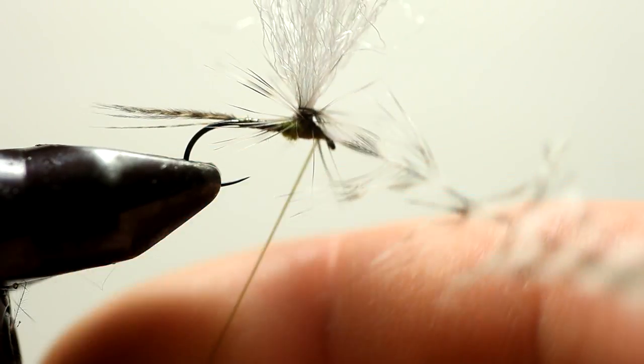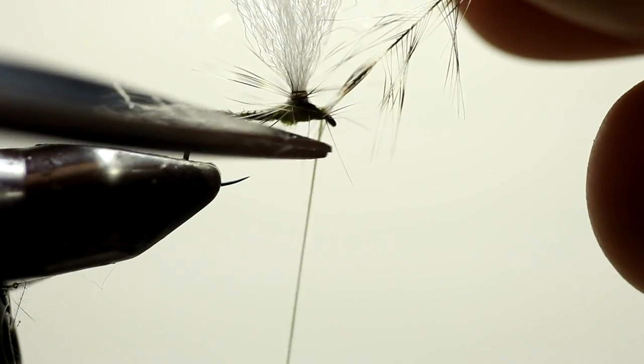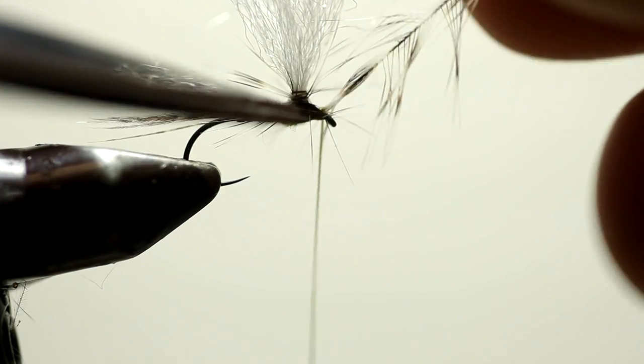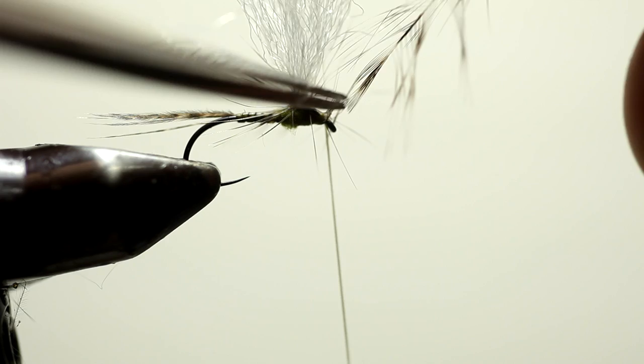Now pull like that, go under, and that's how we're going to tie off the hackle. Now with this light wire hook, you don't need a lot of hackle to hold the fly up. You only need a couple turns.